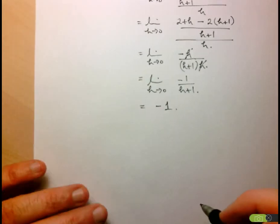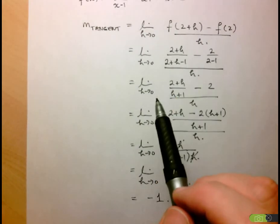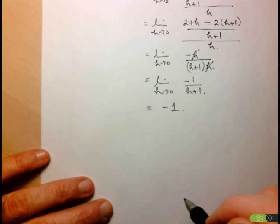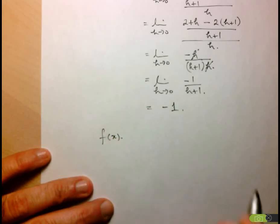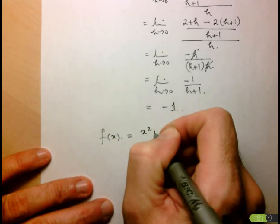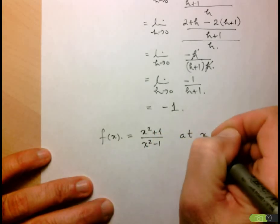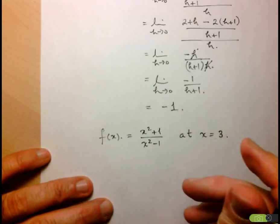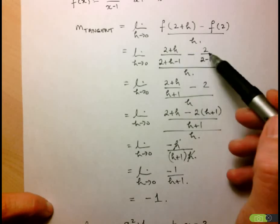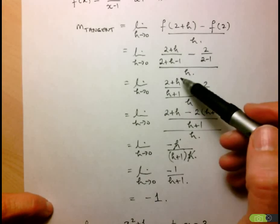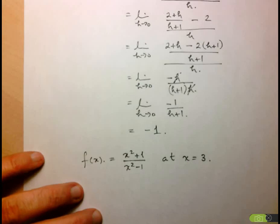What I'd like you to do is work on a similar example. You can use this formulation of the slope of the tangent, or you can use the first one that we saw. The second example is f of x equals x squared plus 1 over x squared minus 1, and you'll do that at x equals 3. You'll probably find that you're going to have to do a subtraction or addition of rational expressions in order to eventually simplify out the difficulty in the denominator. So try that out.